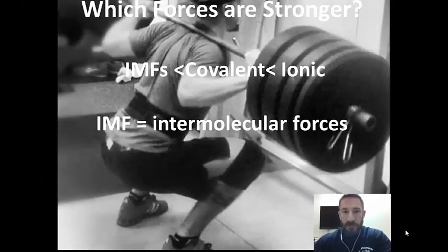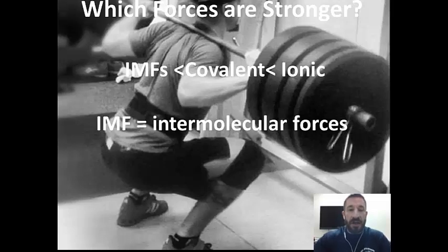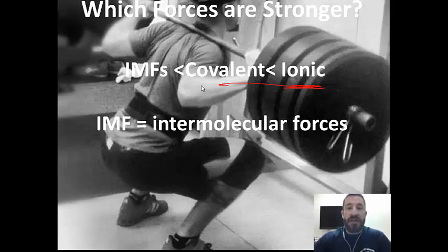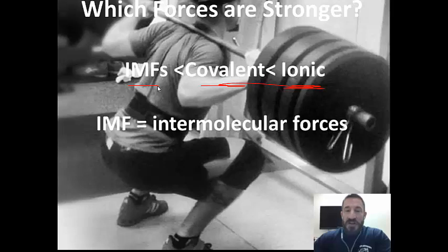You break an intermolecular force when you melt, boil, or freeze something. So which forces are stronger? Remember we talked about intermolecular forces versus ionic versus covalent. Ionic are the strongest, so that's number one, then covalent, and then intermolecular forces. Intermolecular forces like dipole-dipole are only about one percent as strong as covalent.